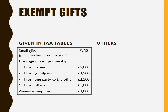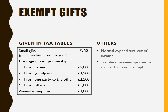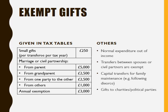There are also other exempt gifts. For instance, any normal expenditure out of your income would be exempt from inheritance tax. If you transfer amounts of money or assets from one spouse to another or between civil partners, these are exempt. Also, capital transfers for family maintenance — such as those following a divorce — would be exempt from IHT. And you can make gifts to charities and political parties without any inheritance tax implications.